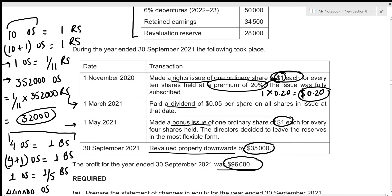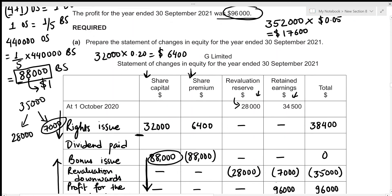Now back to the dividend paid. We pay $0.05 per share on all 352,000 shares in issue at 1st March 2021. Dividend = 352,000 × 0.05 = 17,600. Dividend is distributed to shareholders out of retained earnings, so we deduct 17,600 from retained earnings. The total is also −17,600. Dividend does not affect share capital, share premium, or revaluation reserve.